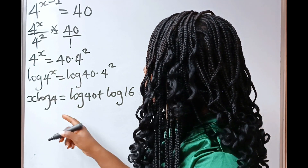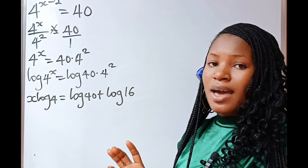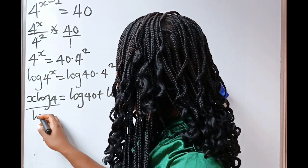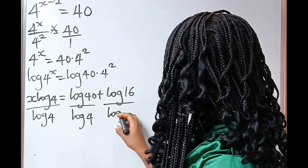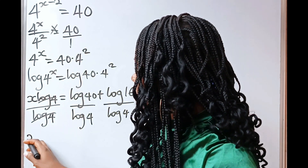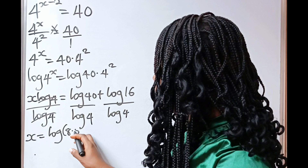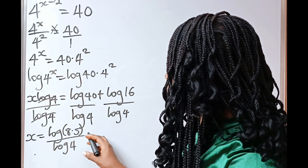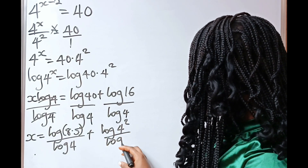Now 4 squared is 16. To get the value of x, we need to divide both sides of this equation by log 4. So we're going to have x is equal to log 40 divided by log 4 plus log 16 divided by log 4. Now, 40 is the same thing as 8 multiplied by 5, and 16 is the same thing as 4 squared.